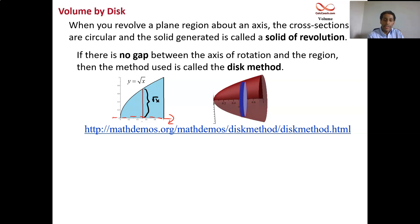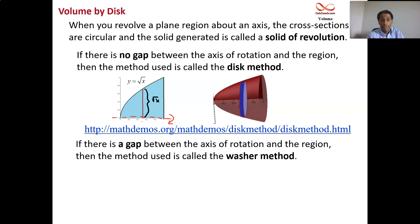What if there is a gap between the region and the axis? When the region is flush up against the axis, there's no gap. But when there is a gap, then you have to use a different method. Well, not really a different method. Honestly, it's the same method. It's basically doing an outside disk and subtracting out an inside disk.